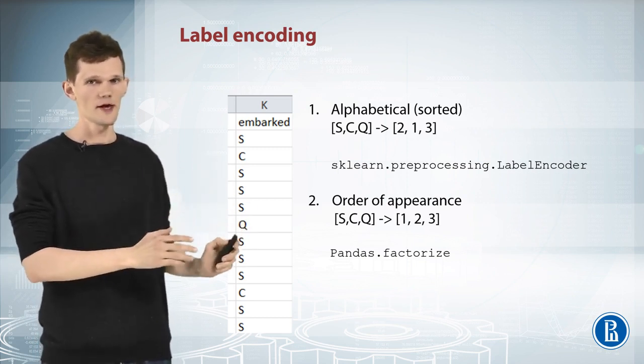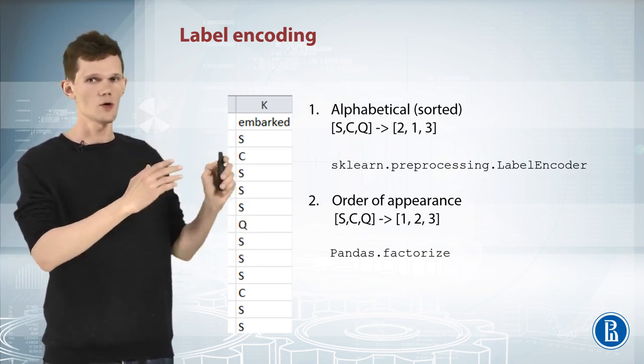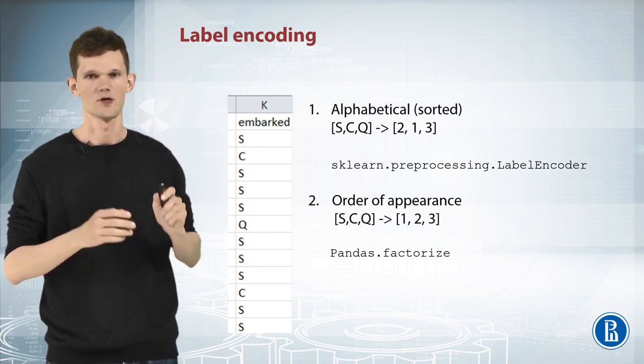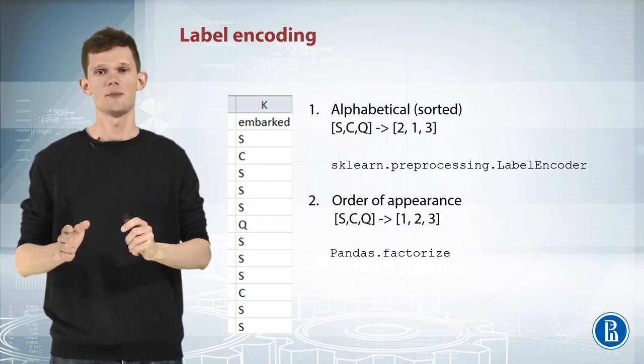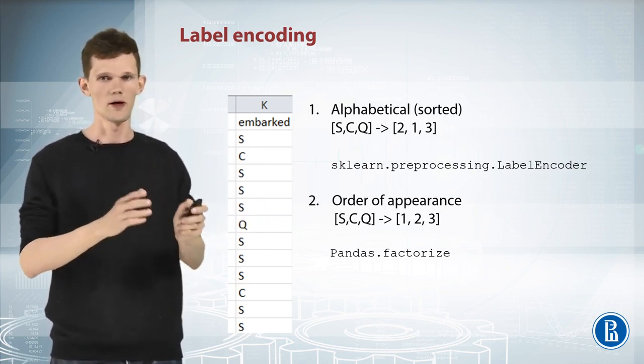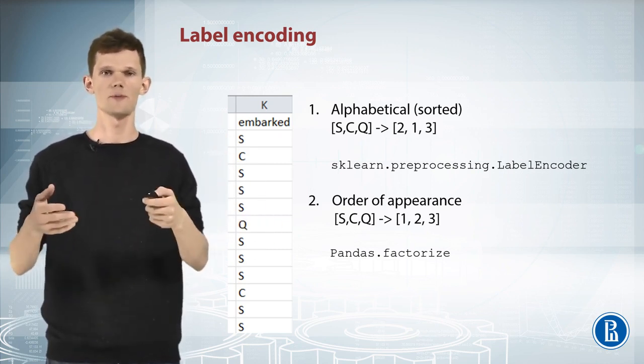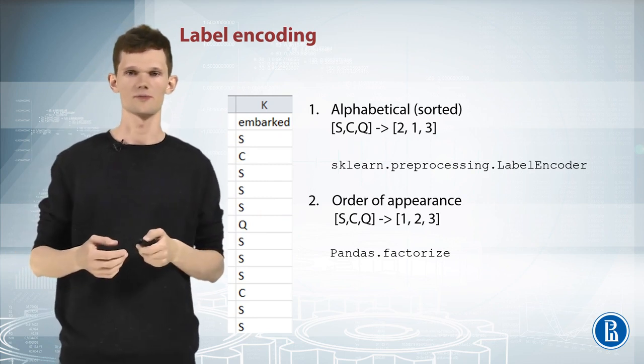First, we can apply encoding in the alphabetical, or sorted order. Unique values of this feature, namely S-C-Q, thus can be encoded as 2-1-3. This is how label encoder from sklearn works by default.